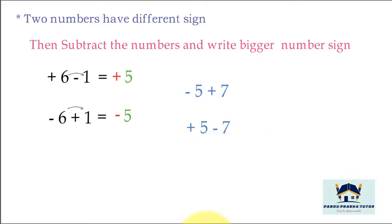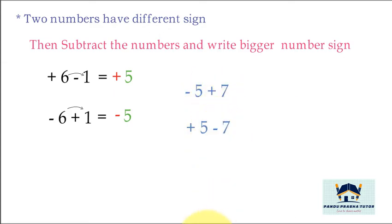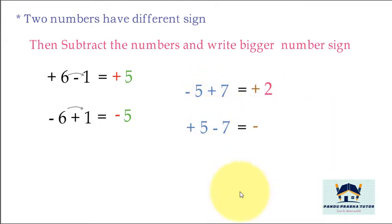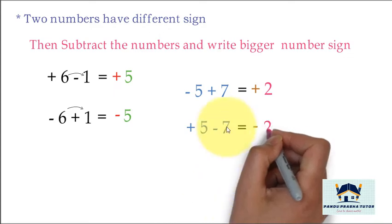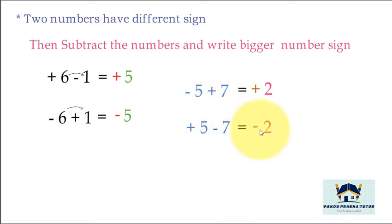Another example: minus 5 plus 7 — different signs, so subtract. Bigger number sign is plus, so plus 7 minus 5 is 2, answer is plus 2. And minus 4 plus 5: bigger number sign is plus, answer is plus 1. Here, if the bigger number has minus sign, then the answer is minus 2.